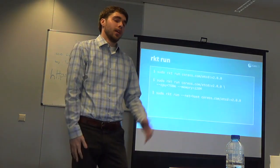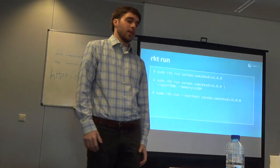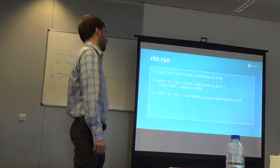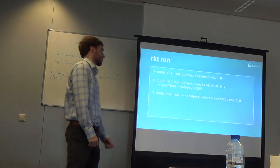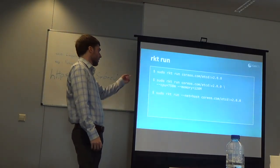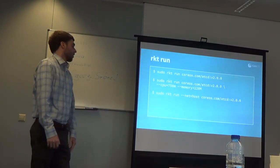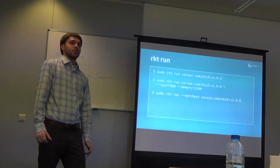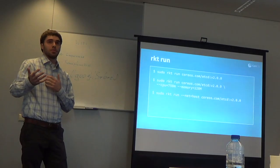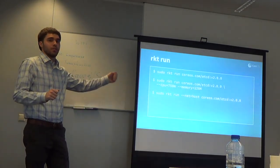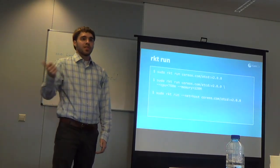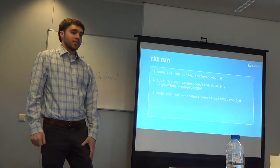On the command line, Rocket looks pretty similar to anything else. You refer to the etcd container by something that looks like a DNS name plus a version. You can do isolators just like Docker — notably these are Kubernetes-compatible resource isolators, so the same syntax you use in Kubernetes works directly here. You can also do networking, port networking, and isolated networks.